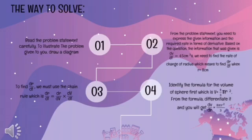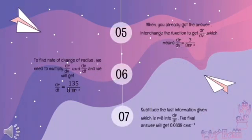The third step is to find dr/dt using the chain rule: dr/dt equals dr/dV multiplied by dV/dt. The fourth step: identify the formula for the volume of a sphere, V equals 4/3 π r³. Differentiate to get dV/dr equals 4π r². The fifth step: take the reciprocal to get dr/dV equals 1 over 4π r². The sixth step: multiply dr/dV and dV/dt to get dr/dt equals 55 over 4π r².